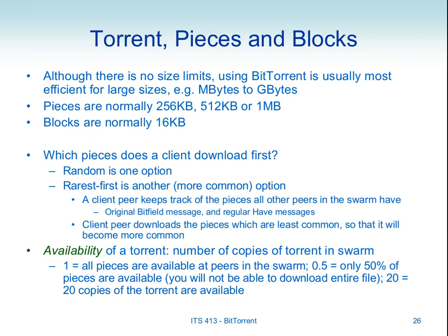If availability is less than 1, you cannot download the entire torrent—not all pieces currently exist in the swarm. If it's greater than 1, you can potentially download it; a higher value means more copies and a better chance of finding a peer with the piece you need—and more importantly, a peer willing to let you download it. Less than 1 means the torrent is incomplete unless another node joins with missing pieces.